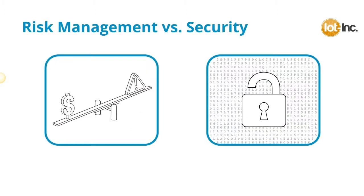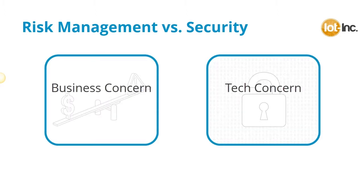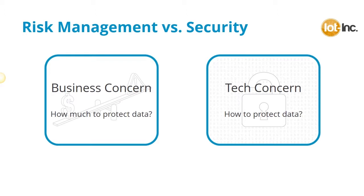What is the difference between risk management and security? Risk management is the business counterpart to security. It is a business concern whereas security is a tech concern. Security answers the question of how to protect the data, but some say security is not really a technical issue at all, but one of budget — and this is where risk management comes in.